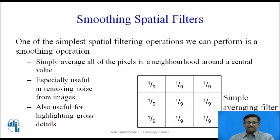Now we will see the first smoothing spatial filter. One of the simplest spatial filtering operations is the smoothing operation, where we simply average all of the pixels in a neighborhood around a center value. This is especially useful in removing noise from images and also useful for highlighting gross details. The filter mask is called the simple averaging filter, where each element in the matrix consists of 1/9. The corresponding pixels in the original image are multiplied and added, giving the average of all 9 values, which becomes the new value at the center pixel.